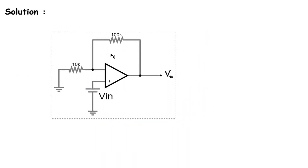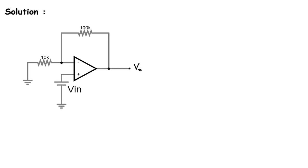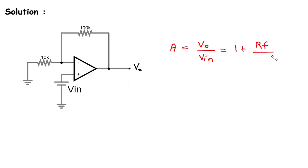Solution. There is a formula for the voltage gain of a non-inverting op-amp. The voltage gain is denoted by A and equals output voltage divided by input voltage, which equals 1 plus RF (feedback resistor) divided by RIN (input resistor). We can identify RF as the feedback resistor and RIN as the input resistor in this circuit.